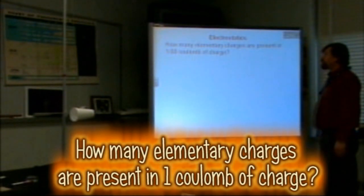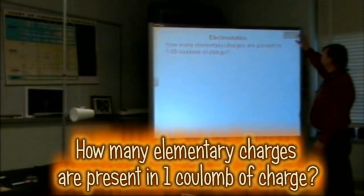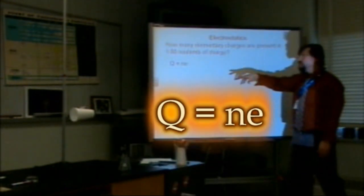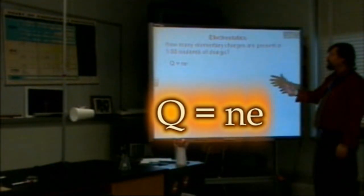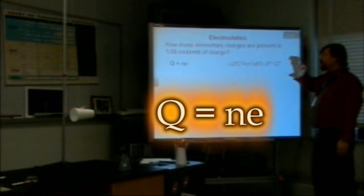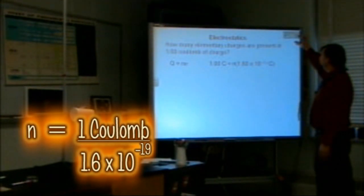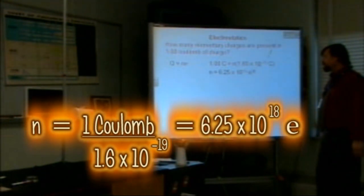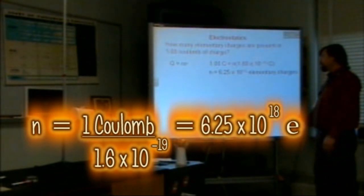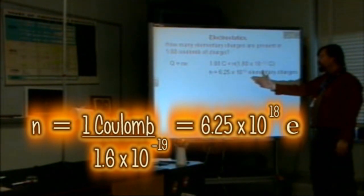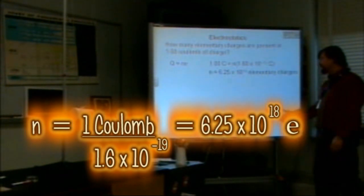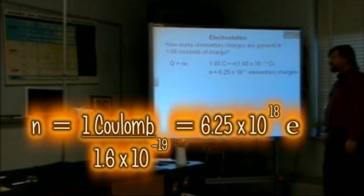How many elementary charges are present in one coulomb of charge? Using q equals n times e, where e is 1.6 times 10 to the negative 19, we solve for n — the number of elementary charges needed to create one coulomb of charge. The answer is 6.25 times 10 to the 18 elementary charges per one coulomb of charge.